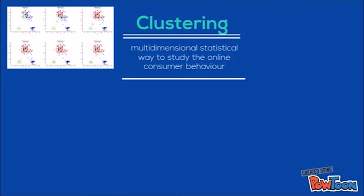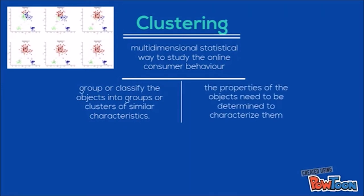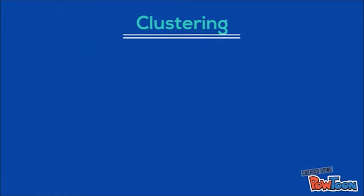Clustering is a multidimensional statistical way to study online consumer behavior. The main task of cluster analysis is to group or classify objects into groups or clusters of similar characteristics. Hence, the properties of the objects need to be determined to characterize them, and there are also some ways to differentiate between the similarities. There are a few algorithms in clustering: DB-SCAN, Expectation Maximization, and K-means.